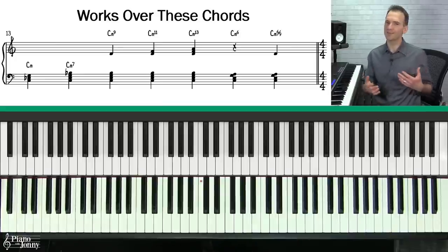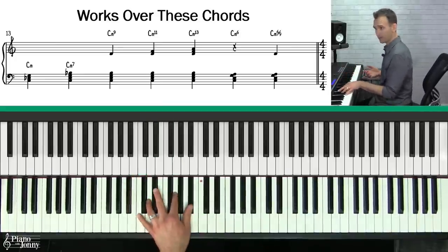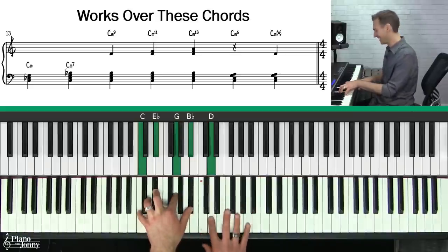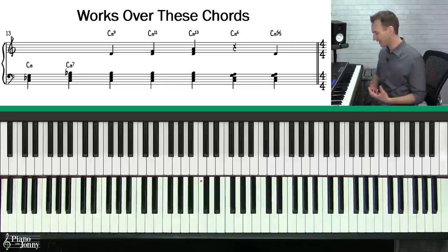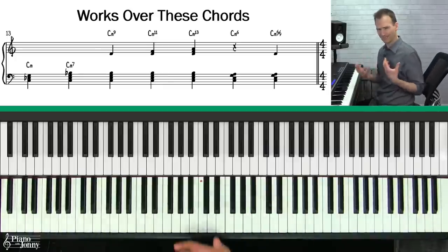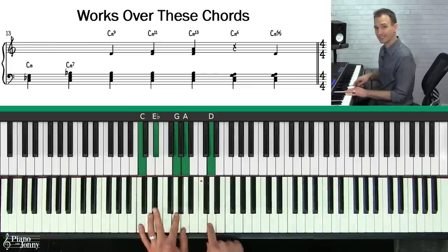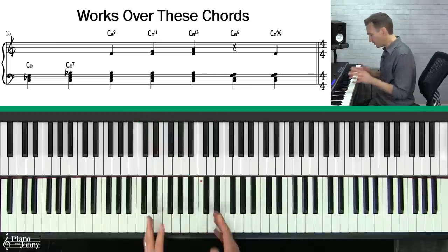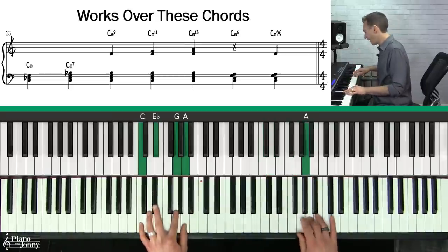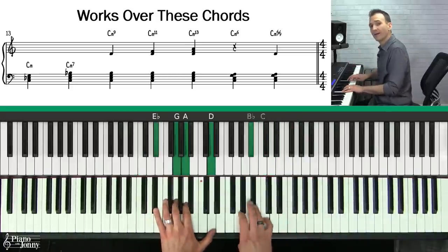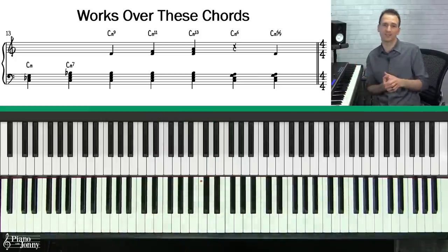The Dorian scale works on just about any minor chord. If you're playing C minor, C minor 7, C minor 9, C minor 11, C minor 13 — these are all common minor chords you might play in a jazzy style. C minor 6 and C minor 6/9 also work over the C Dorian scale, because all of the notes in these chords are contained in the C Dorian scale.